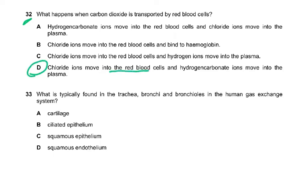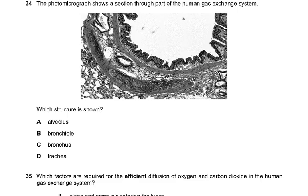Question 33. What is typically found in the trachea, bronchi, and bronchioles? Cartilage is only present in some — the trachea and bronchus — not all of them, so the answer is ciliated epithelium. Question 34. The photomicrograph shows a section through part of the human gas exchange system. The structure shown is a bronchus, because you can see plates of cartilage.